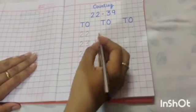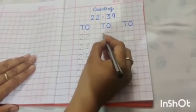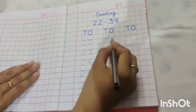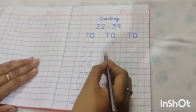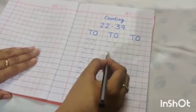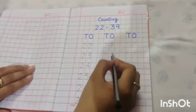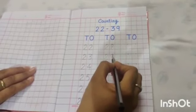After 27, which number will come? Yes. Very good. 28. 29.